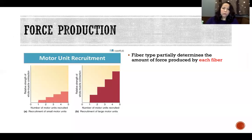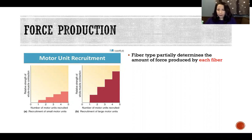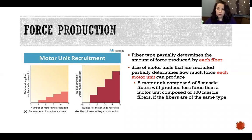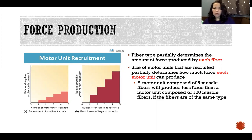Starting with motor unit recruitment: fiber type partially determines the amount of force each fiber is able to produce. The size of the motor units recruited partially determines how much force each motor unit can produce — depending on how many fibers a motor unit has, it can produce more or less force. A motor unit composed of five muscle fibers will produce less force than a motor unit composed of 100 muscle fibers, assuming that the fibers are the same type.